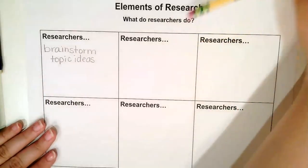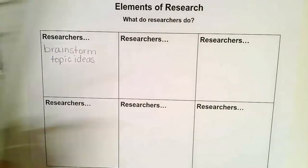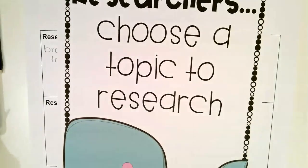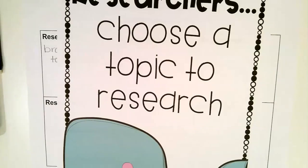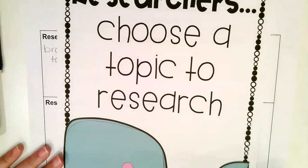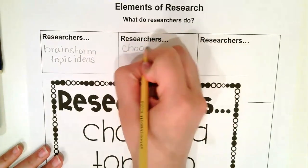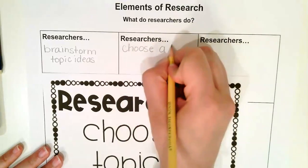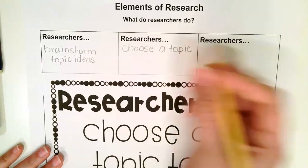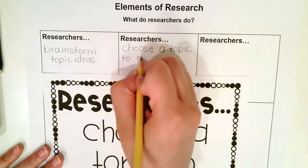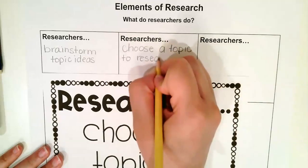The second thing that researchers do is they choose a topic to research. So once they've brainstormed their topic ideas, now they need to choose a topic. Our topic is going to be animals, so we're going to brainstorm the different types of animals we can research, and then we're going to choose a topic to research. That goes in the second box: 'choose a topic to research.'